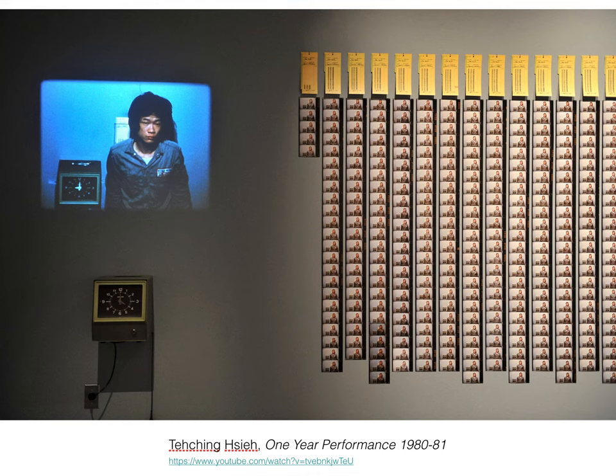The first artwork I want to share with you is by Tishing Hesse, and it's a one-year performance from 1981. Hesse has used one year as a measure for many of his artworks. In this piece, he installed a time clock in his apartment and punched in every hour on the hour for an entire year.